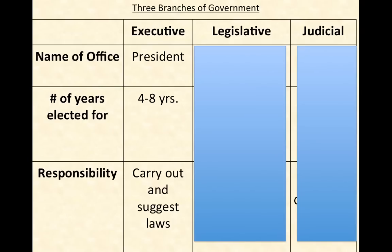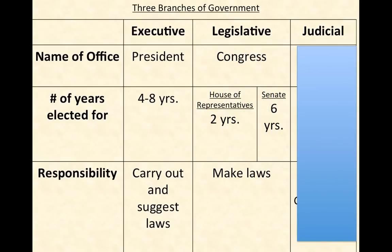The responsibilities of the president are many, but one key responsibility is that the president has to carry out and suggest laws. The second branch is the legislative branch, and the name of office is Congress. In America, Congress is split into the House of Representatives and the Senate. Members serving in the House of Representatives can serve for a maximum of two years, whereas those serving in the Senate can serve for a maximum of six years. The responsibility of the legislative branch is to make laws.